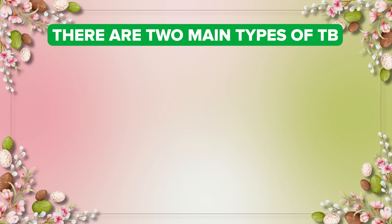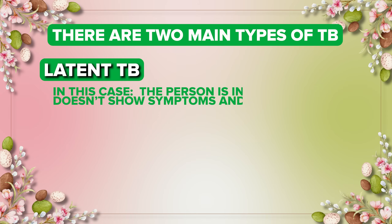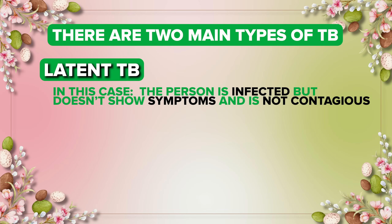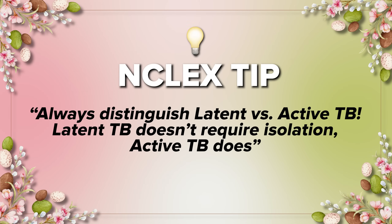There are two main types of TB. One, latent TB — in this case, the person is infected but doesn't show symptoms and is not contagious. And two, active TB — in this case, the person is sick, shows symptoms, and can spread TB to others. Always distinguish latent versus active TB. Latent TB doesn't require isolation; active TB does.